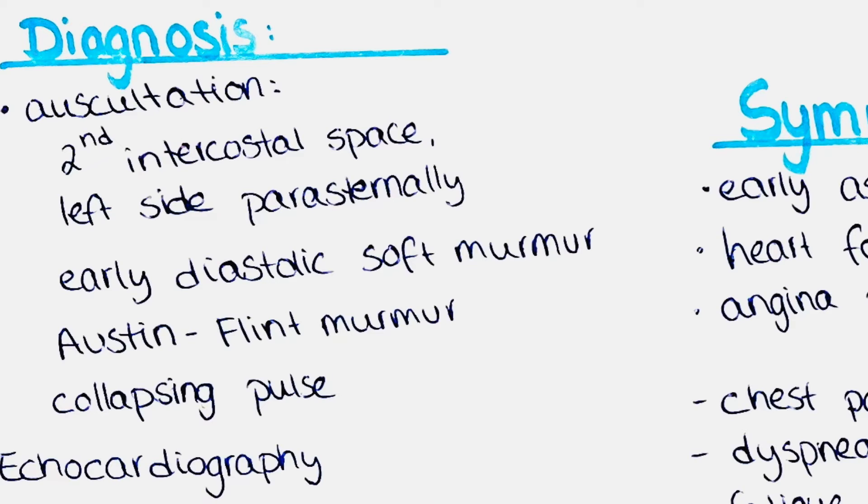Aortic regurgitation can also lead to pulmonary artery hypertension, as the right ventricle has to work harder to pump blood through the lungs, increasing pressure in the pulmonary artery. It is important to note that echocardiographic findings are not always specific for aortic regurgitation — other conditions such as mitral regurgitation can cause some of the same findings. However, echocardiographic findings can be helpful in diagnosing and assessing the severity of aortic regurgitation.